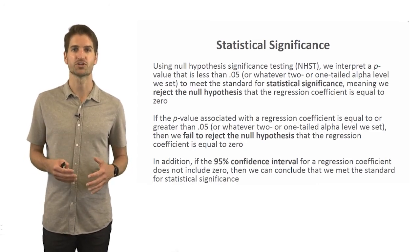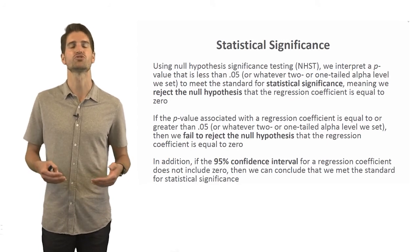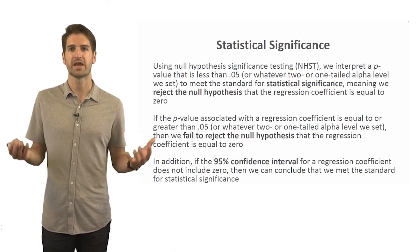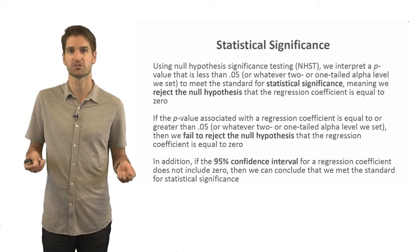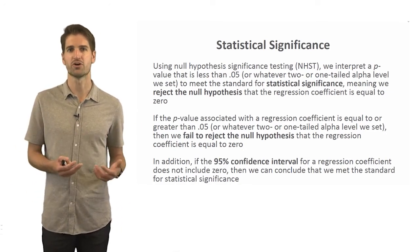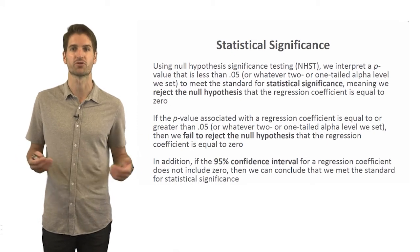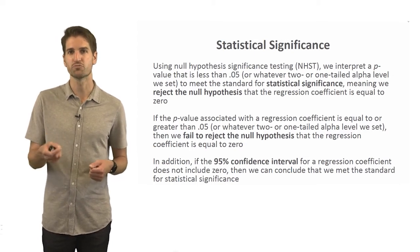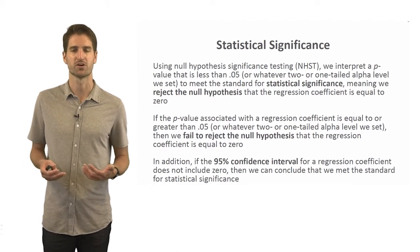If we fail to reject the null hypothesis, this is when the p-value associated with a regression coefficient is equal to or greater than our alpha level of 0.05. In that case, we're failing to conclude that the regression coefficient — or slope — is different from zero, meaning we can't conclude there's any directional relationship. We can also use confidence intervals: if our 95% confidence interval does not include zero, we conclude we have met the standard for statistical significance. So in simple linear regression, we're trying to determine whether our slope is statistically different from zero, and what direction it is — positive or negative.